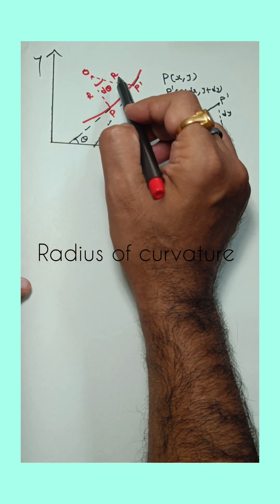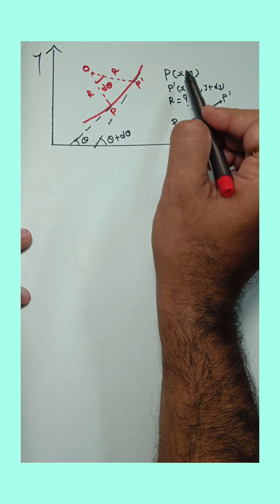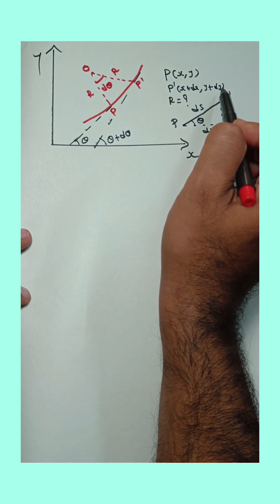Equation of derivation of radius of curvature of this arc. Now consider two points on the arc, P and P dash. Coordinates are x, y and x plus dx, y plus dy.